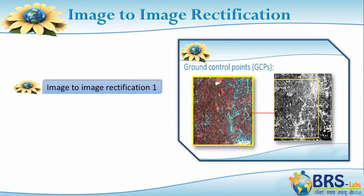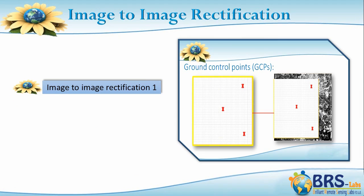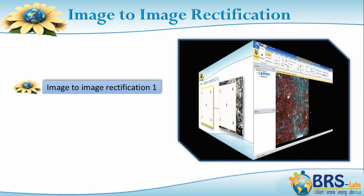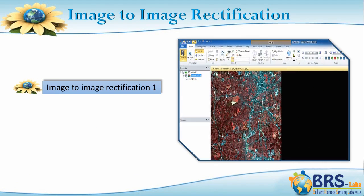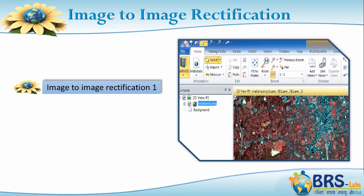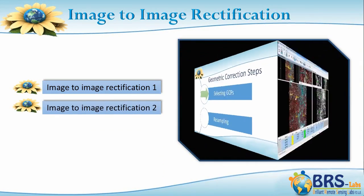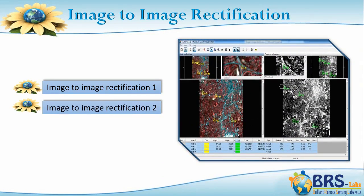Second, the Image-to-Image Rectification group of lectures. In lecture 1, we will discuss the definition of image-to-image rectification, its preparation and implementation. In lecture 2, we will discuss the implementation of the first step of geographic correction steps, which is the selection of ground control points.